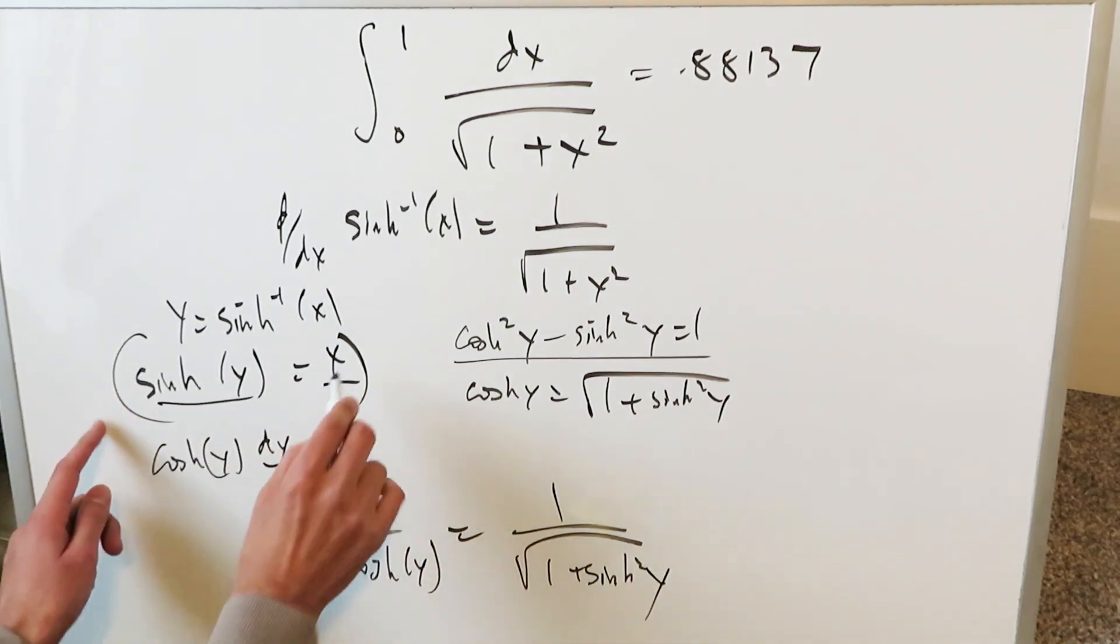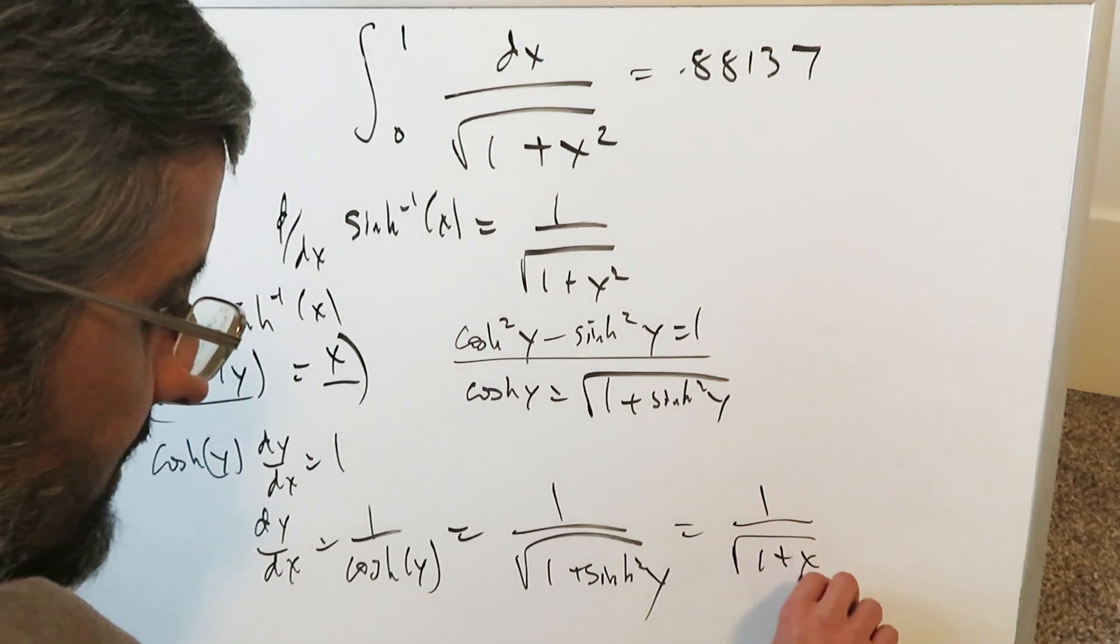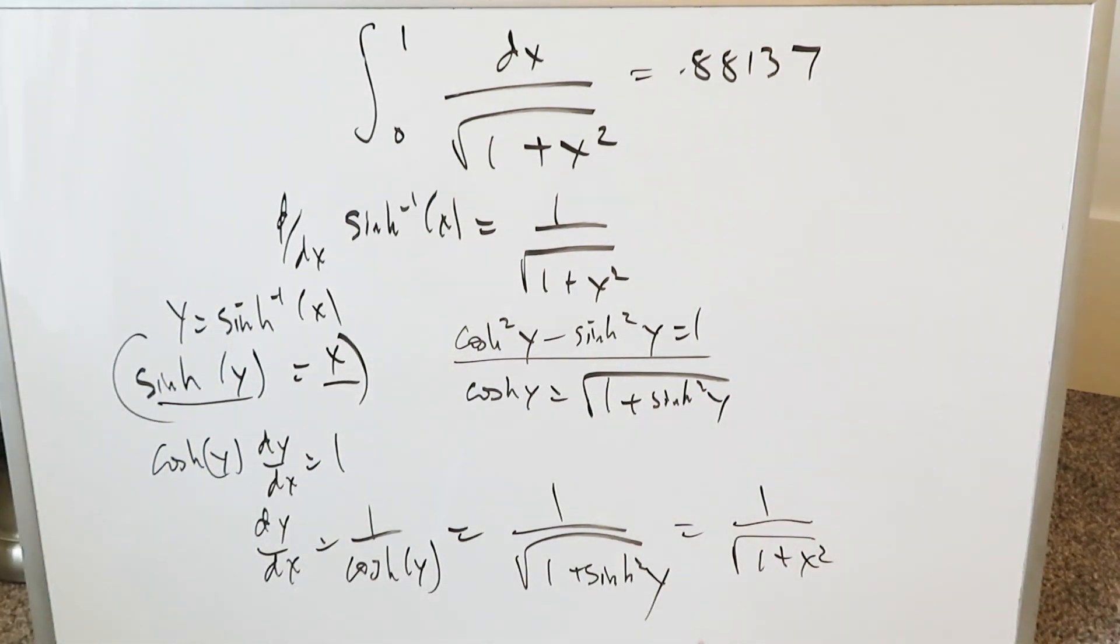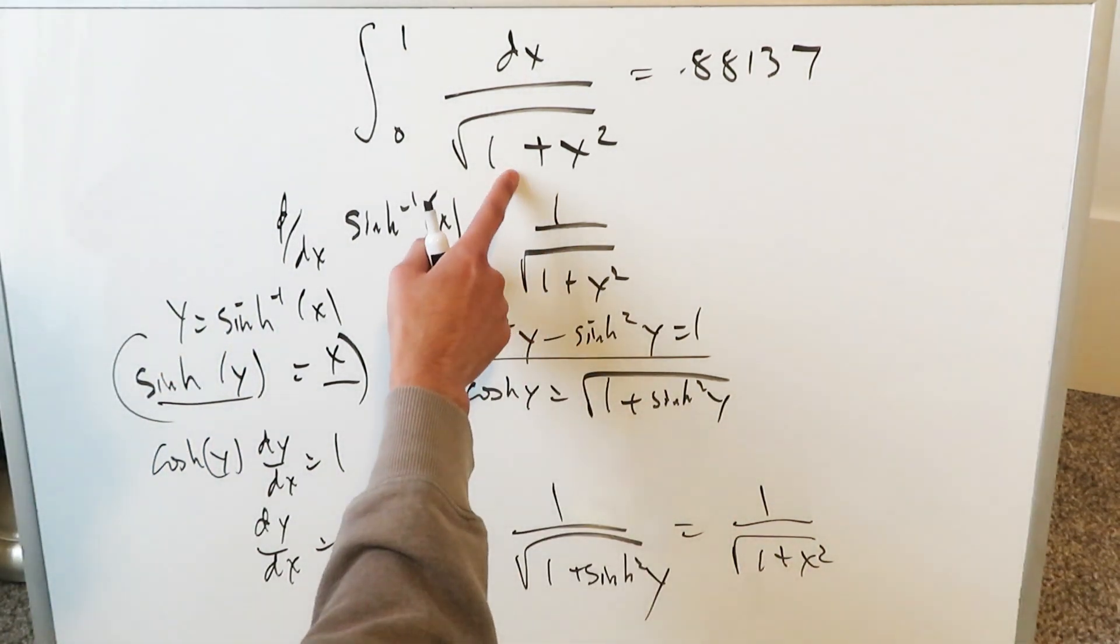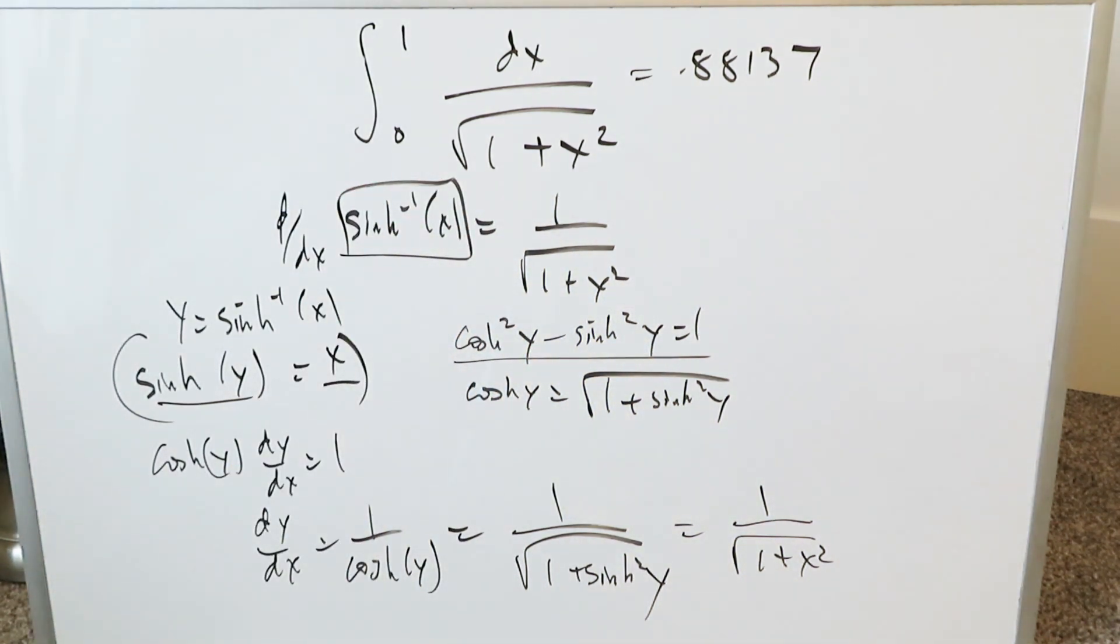Sinh y is equal to x. Sinh squared y is equal to x squared. Bring that in. 1 over root 1 plus x squared. That's exactly what we're looking at. The derivative here is the integrand. And the integrand's antiderivative therefore must be this. And that's what you will do.